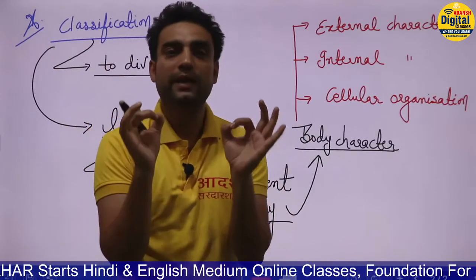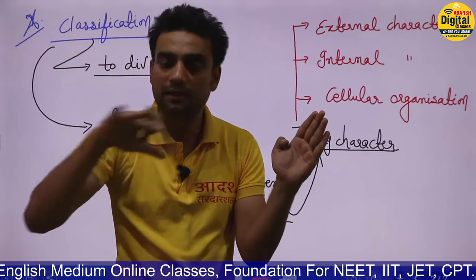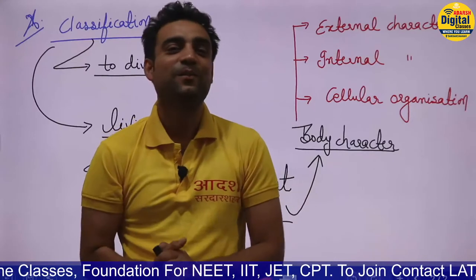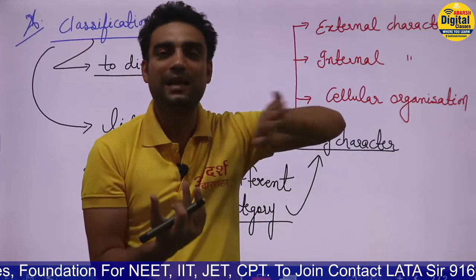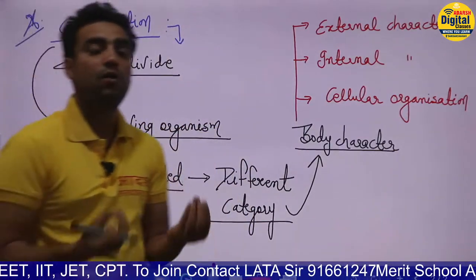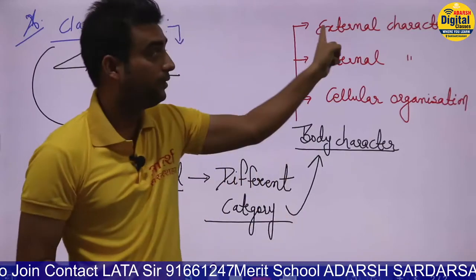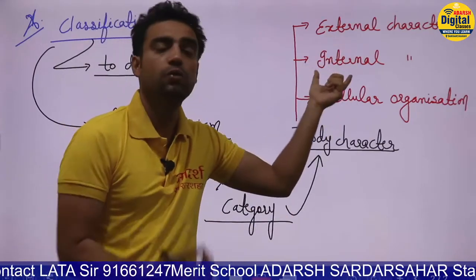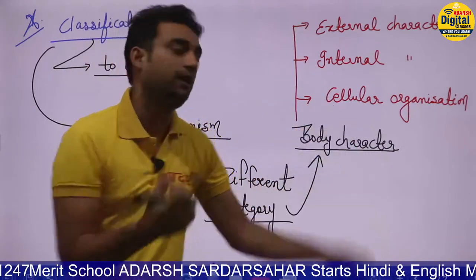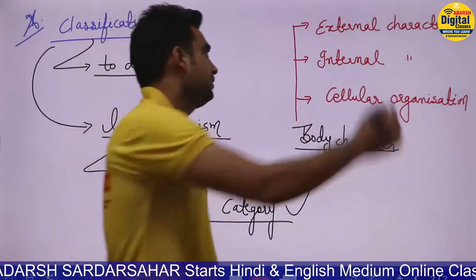Organisms with similar characters are placed in a single category; organisms with the same characters are placed in the same category. For example, plants have the same characters so all plants go into plant kingdom; animals have the same characters so all animals go into animal kingdom. Organisms are divided on the basis of external character, internal character, and cellular organization.